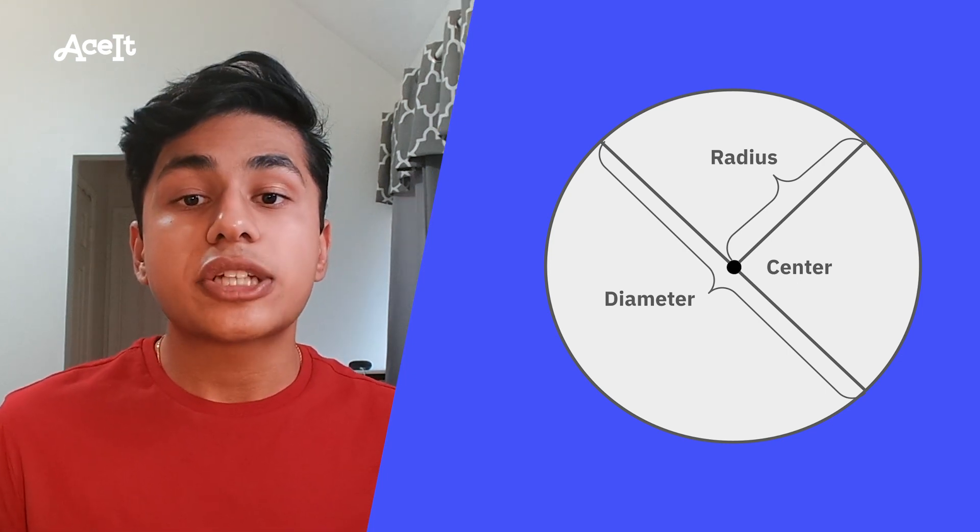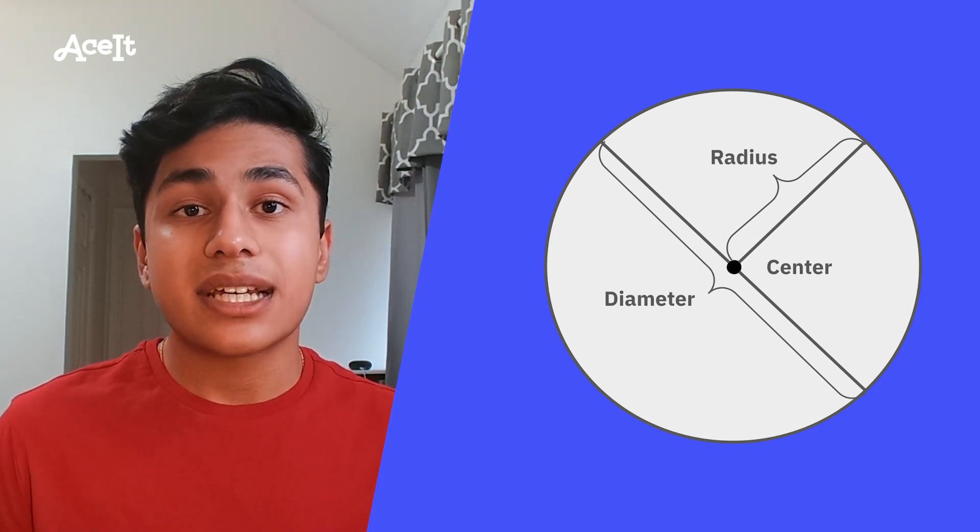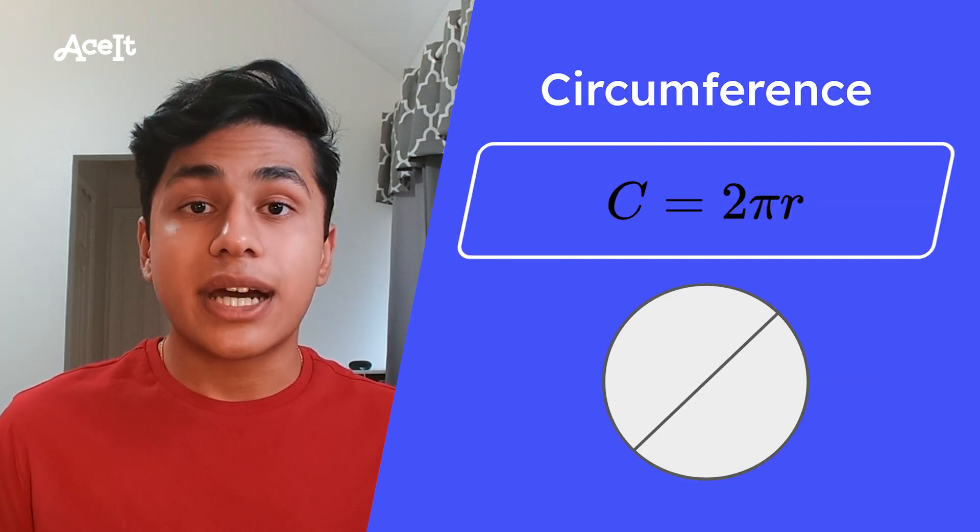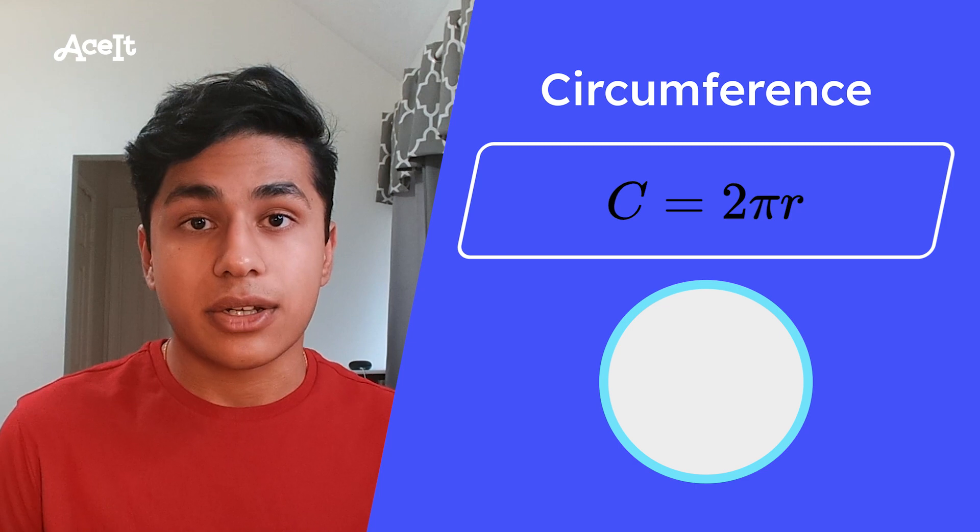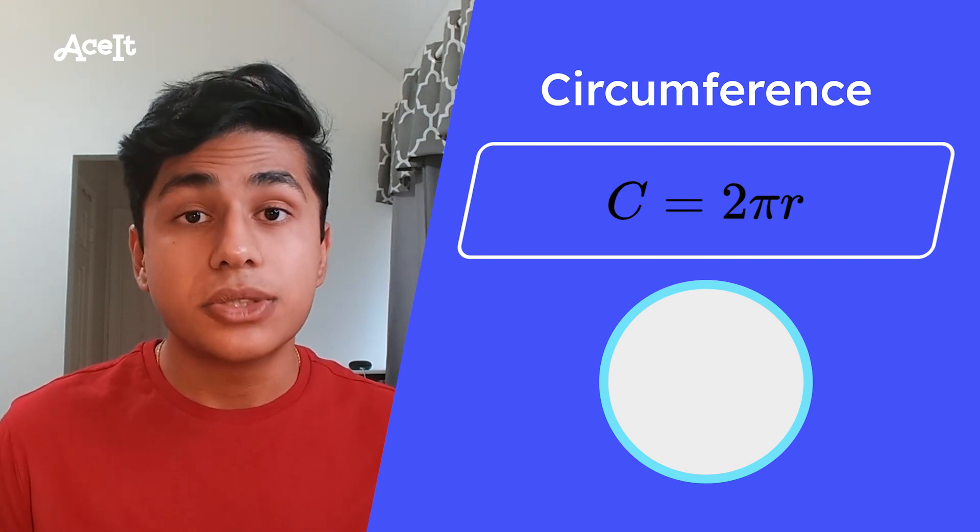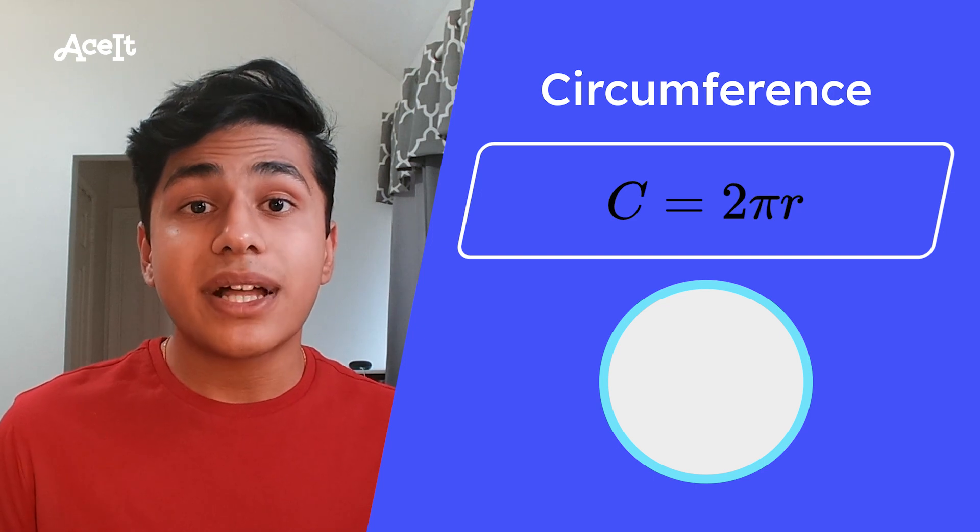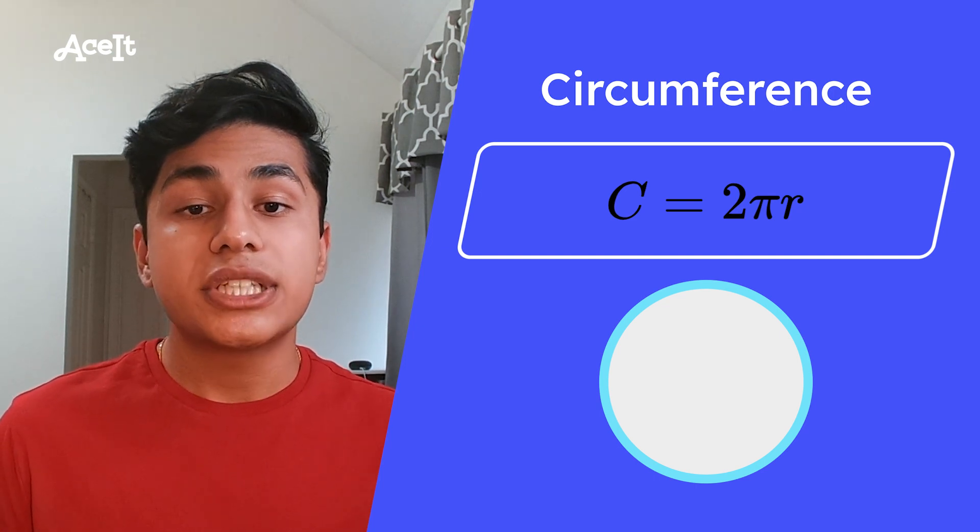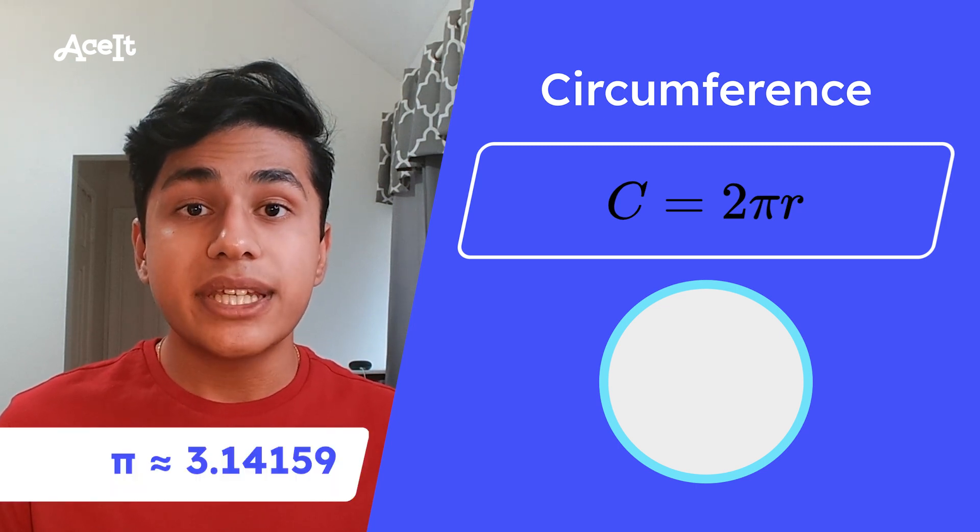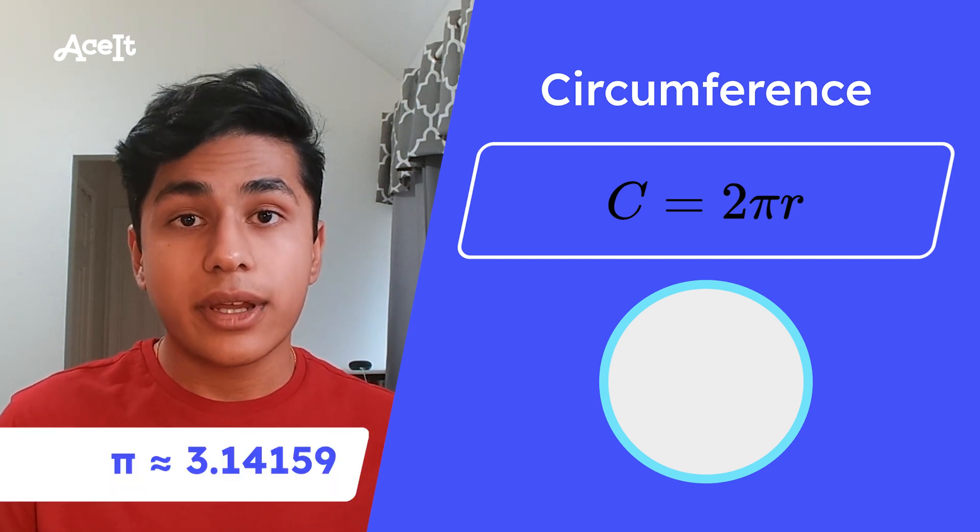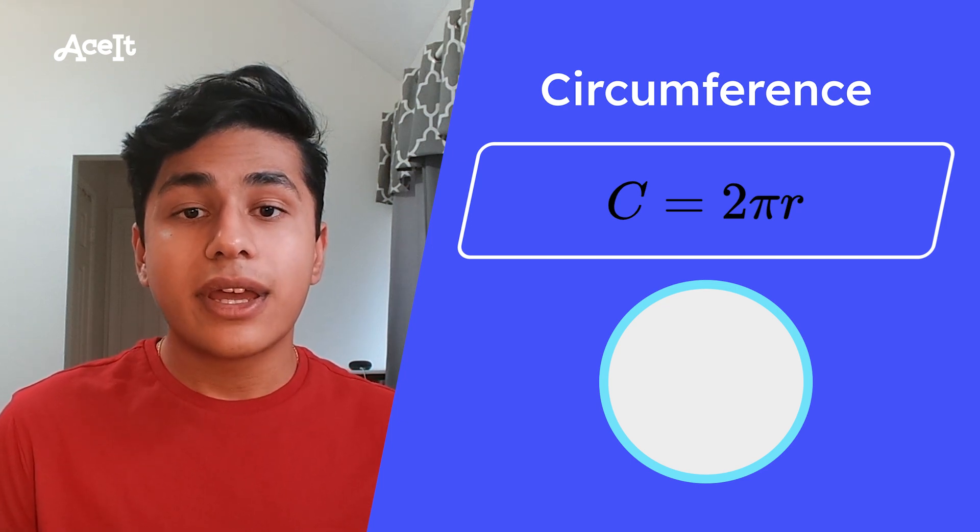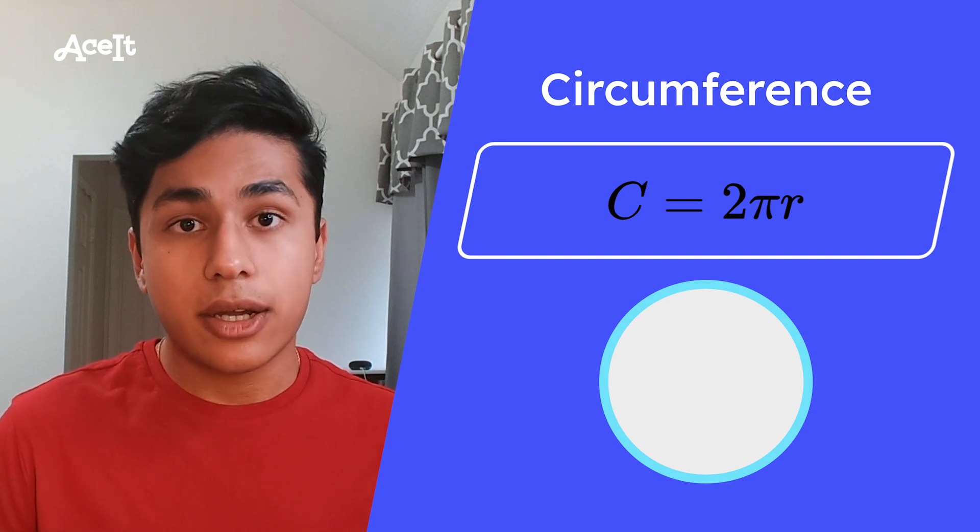Now that we've gone over the terms that you need to know, let's get into some of the equations. We'll start off with the circumference. Think of the circumference as the perimeter of the circle, and it's calculated by taking the diameter, or as you recall, 2 times the radius, and multiplying that by pi. Pi is the ratio of the circumference of the circle to the diameter, and it's approximately equal to 3.14, meaning that your circumference is about 3.14 times your diameter, or 2πr.